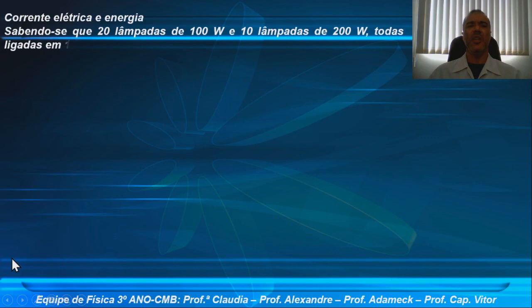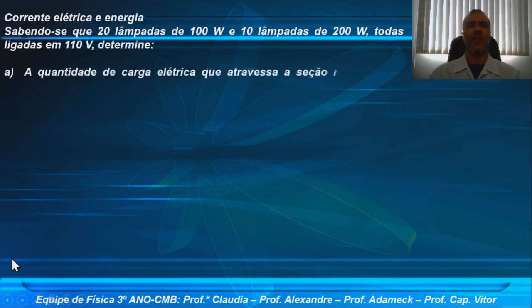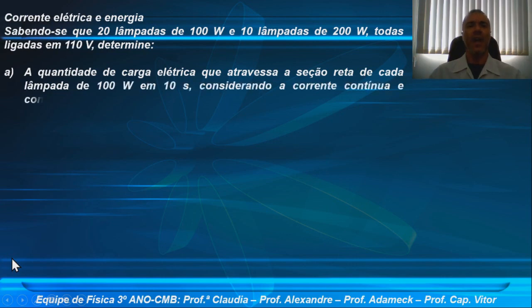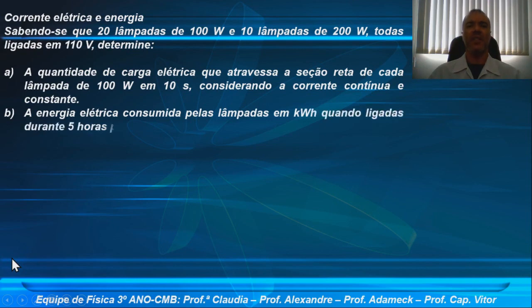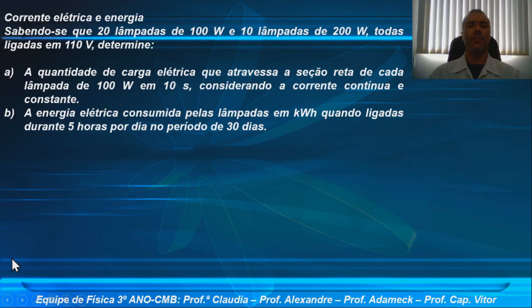Sabendo-se que 20 lâmpadas de 100 watts e 10 lâmpadas de 20 watts, todas ligadas em 110 volts, determine: letra A, a quantidade de carga elétrica que atravessa a seção reta de cada lâmpada de 100 watts em 10 segundos, considerando a corrente contínua e constante. Letra B, a energia elétrica consumida pelas lâmpadas em kilowatt-hora, quando ligadas durante 5 horas por dia no período de 30 dias.